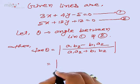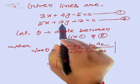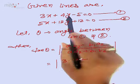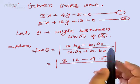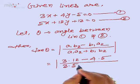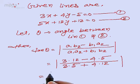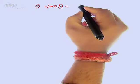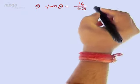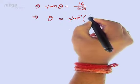Now, substituting the values: a1 is 3, b2 is 12, b1 is 4, a2 is 5. So we get mod of 3 times 12 minus 4 times 5, upon 3 times 5 plus 4 times 12, which gives mod of 36 minus 20 upon 15 plus 48, which is 16 upon 63. Hence theta is equal to tan inverse 16 by 63.